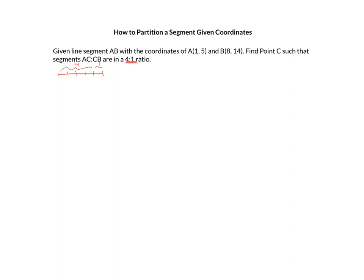If I quickly sketch what's happening, this point is at (1, 5) and the other point is at (8, 14) — way up here. So this is my point A and there's my point B. I need to cut this into this 4 to 1 ratio to find out where to put point C.